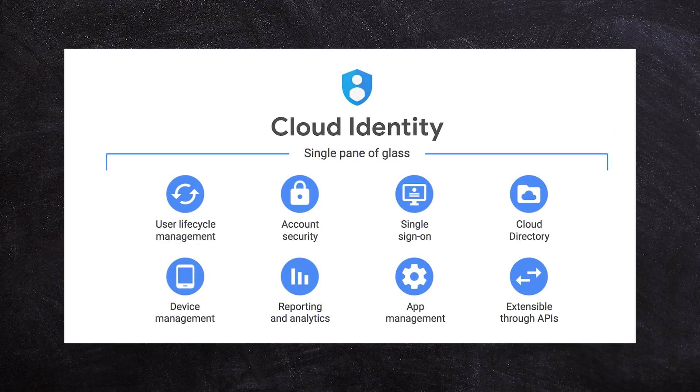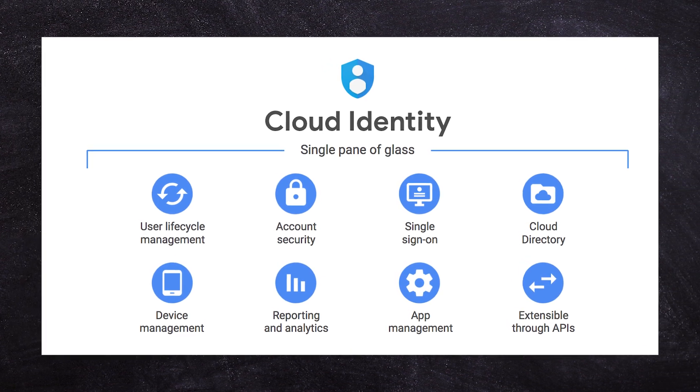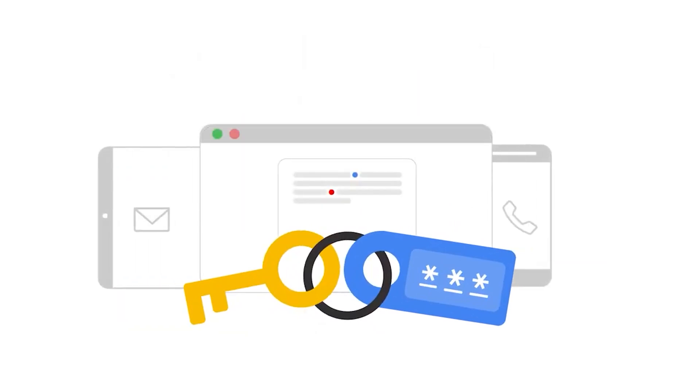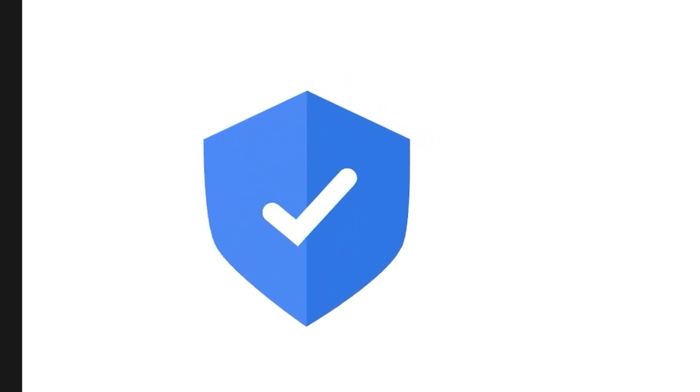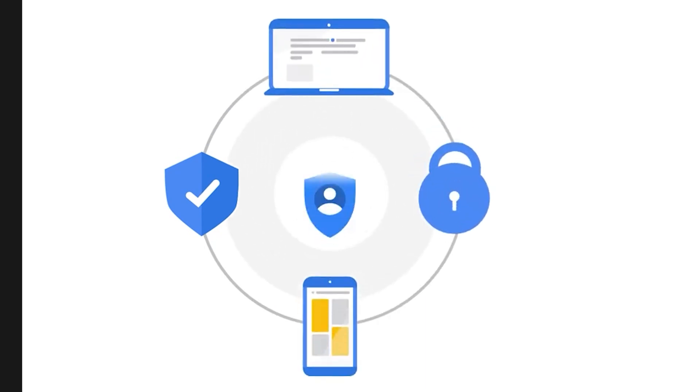Now if you just want to manage one domain and get access to another account, you can use something called Google Identity. With Google Identity, you can create an administrator user — potentially even a super administrator user — inside your customer's account without having to pay for a license. Without having to assign a mailbox to that user, you can get access to that domain's admin panel with an identity, without paying for an extra license.